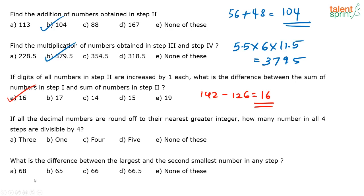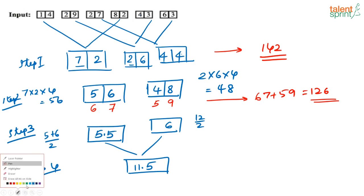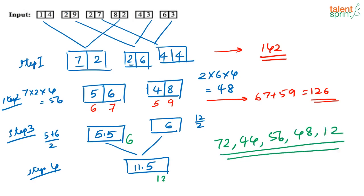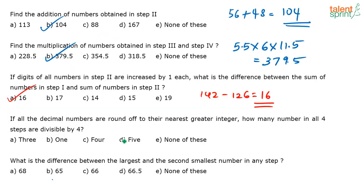If all decimal numbers are rounded off to their nearest greatest integers — 5.5 rounds to 6, 11.5 rounds to 12 — how many numbers across all four steps are divisible by 4? Those numbers are 72, 44, 56, 48, and 12 — that's 5 numbers. The correct answer is 5.